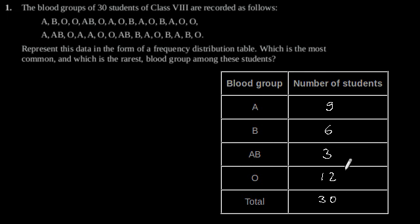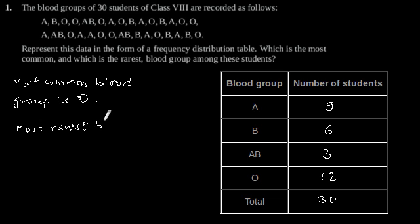From this frequency distribution table, we can observe that the most common blood group is O, and the rarest blood group is AB.